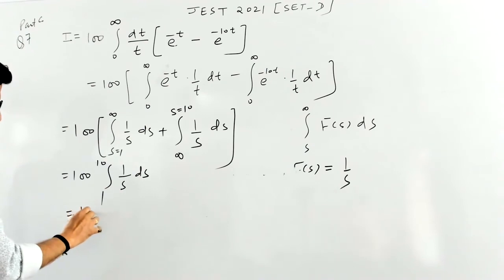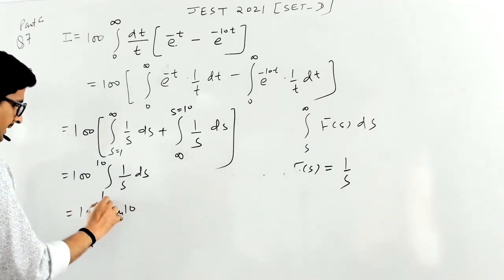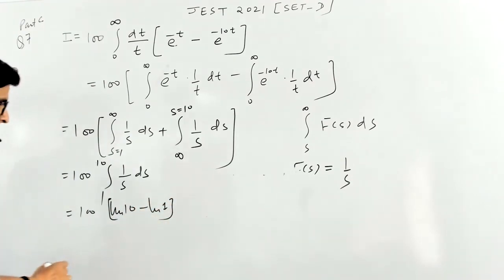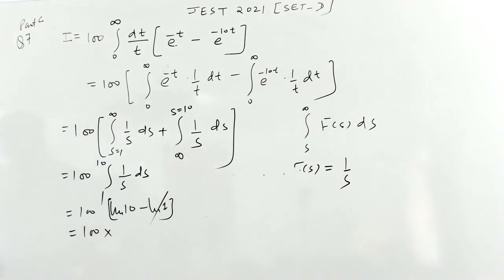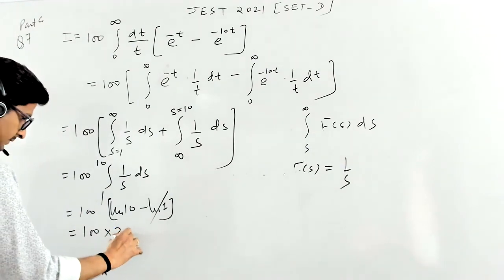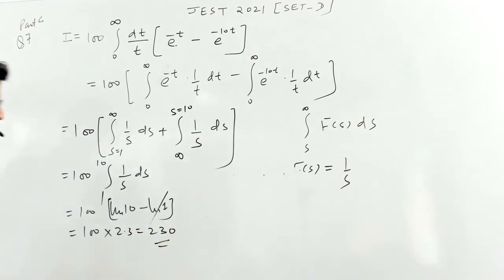So it will become 100 times log of 10 minus log of one. And what is the value of log of one? It is zero. And the value of log of 10 is 2.3, so it will become 230. This is the answer.